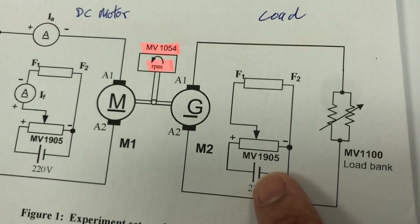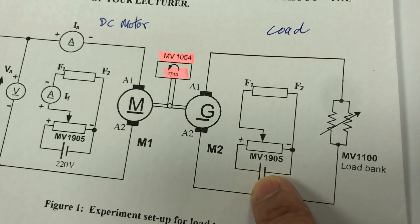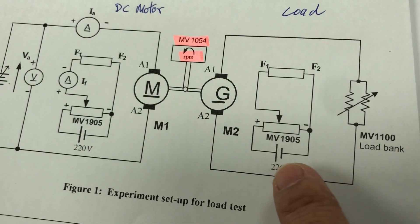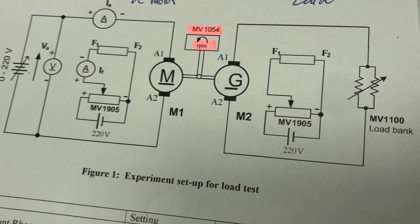And the other one is the field circuit. So we will increase the field to increase the loading. Because then the generator will need to work harder when field current increases.